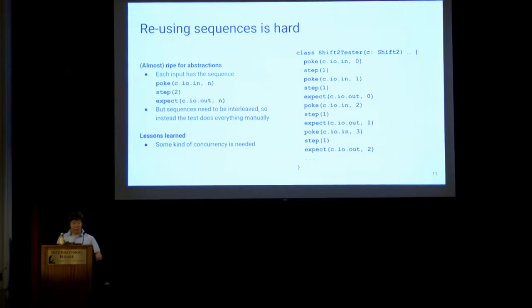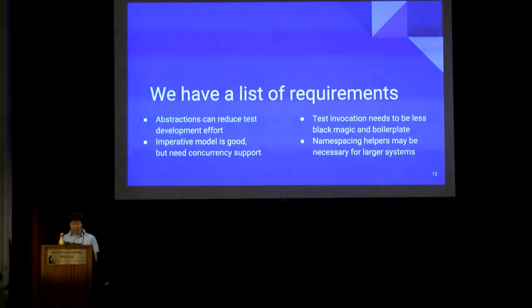That abstraction style doesn't carry over to IO sequences that span a non-zero duration. For example, if I wanted to test this very simple two-cycle shift register, where I have the sequence poke, wait two cycles and expect. But if I want to pipeline values into the shift register, like on the right-hand side, I have to manually unroll everything and basically write the entire test manually. So the takeaway is some kind of concurrency could help here.